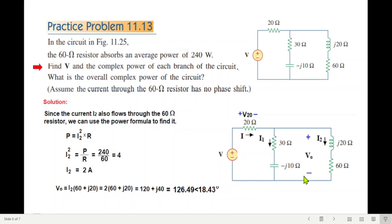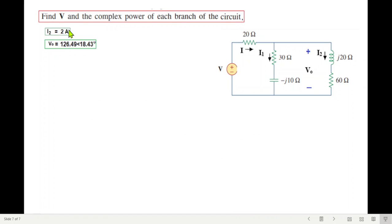Now we can calculate the total voltage. I2 into this impedance, so I2 into 60 plus j20. This gives the total voltage V0. So I2 we know, V0 we know. Now we can calculate I1.